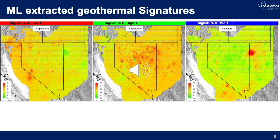Regardless of the data gaps, uncertainties, and measurement errors in these datasets, we are able to analyze them and extract three signatures associated with low temperature, high temperature, and mid temperature resources, which are shown in these three maps.